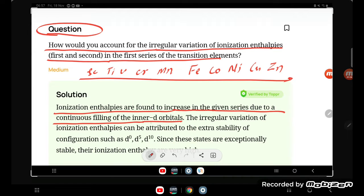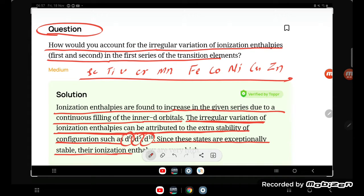The irregular variations of ionization enthalpy can be attributed to the extra stability of configurations such as d0, d5, and d10. Since these states are exceptionally stable, their ionization enthalpies are very high.